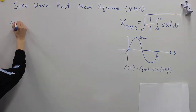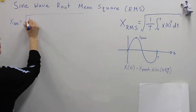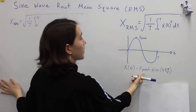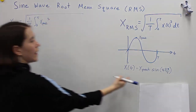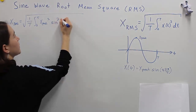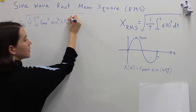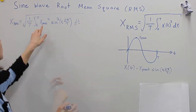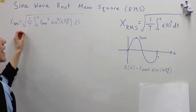Let's start with xRMS. Take the square root of all this, and 1 over T. First we need to square the expression, so we're going to get xpeak squared. And then we're going to have sine squared of 2πt over T. Taking the integral of that with dt. This value xpeak squared is not affected by t, so we're going to move it outside.